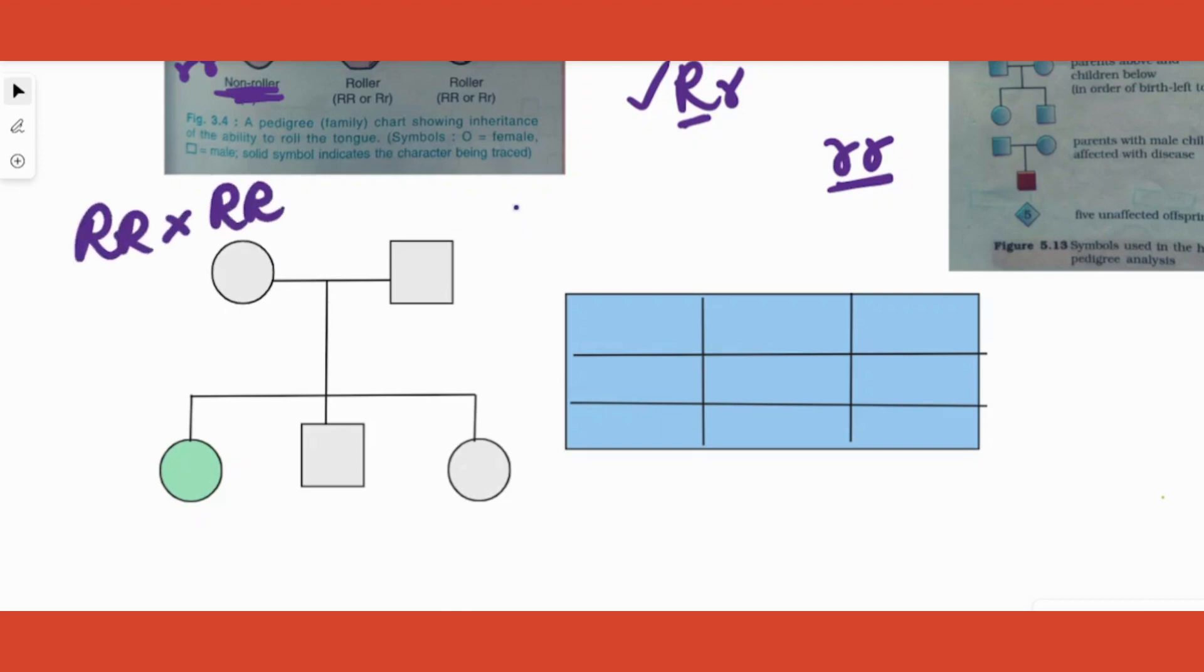Are the parents R crossed with R or are the parents R crossed with r? Are they homozygous dominant or heterozygous dominant? You know for sure it is dominant. Why? Because if it is recessive in any manner, if it is recessive like this, they are non-rollers. Now we know they are rollers.